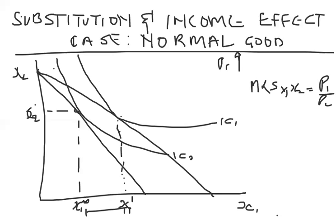The idea here is to ask: prior to the fall in price, we were consuming at point A — that was our original optimum. I'll call this point B as the new optimum. Now because there is a fall in price, our real income has increased and we are consuming more of x1. The question is: what is the amount of money we have to deduct from this person's income — since real income has increased — in order to ensure the person obtains the same utility as before the price change?